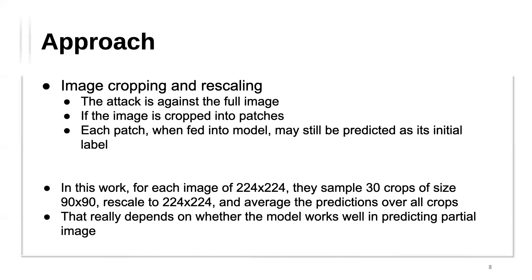One challenge is that the model was originally trained on whole images but now processes partial images. Also, since perturbations are already applied, even cropped partial images still contain the perturbations. This transformation does not undo perturbations — it changes the spatial relation of the perturbation by applying crops. The attacker can still attack those partial images, so this is not a very robust approach on its own.